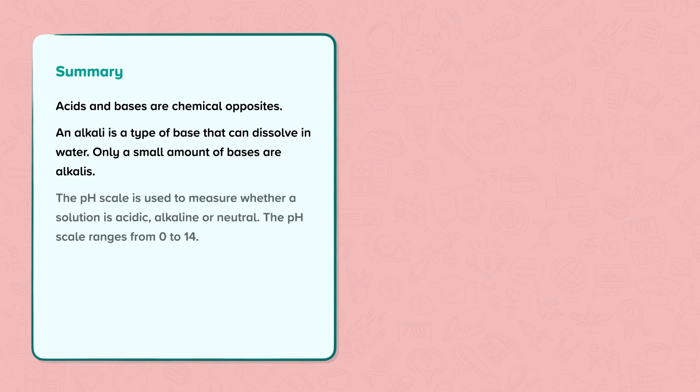The pH scale is used to measure whether a solution is acidic, alkaline, or neutral. The pH scale ranges from 0 to 14.